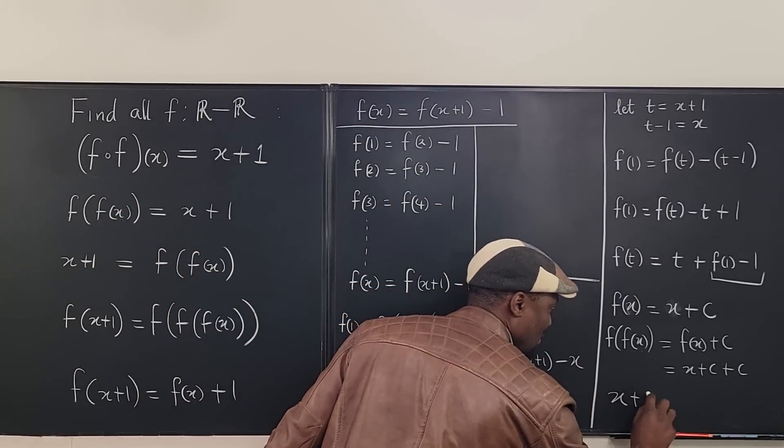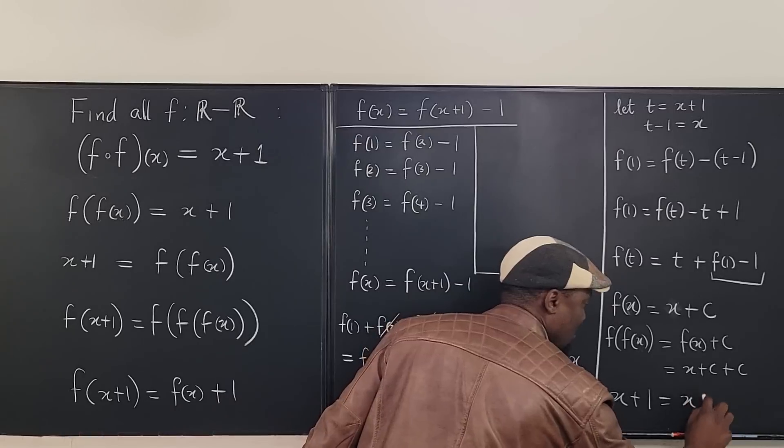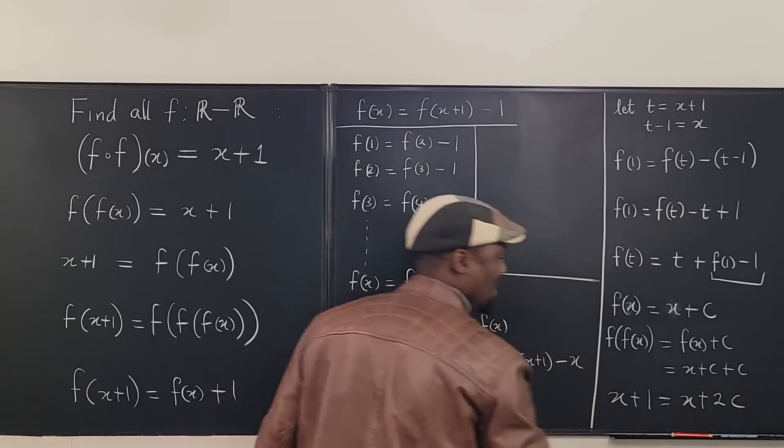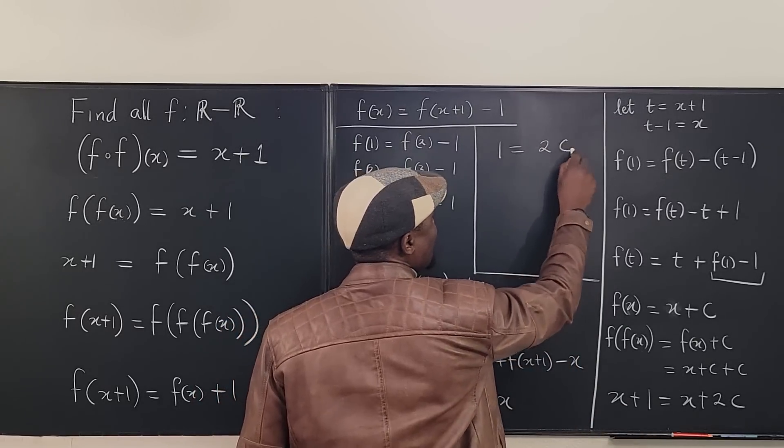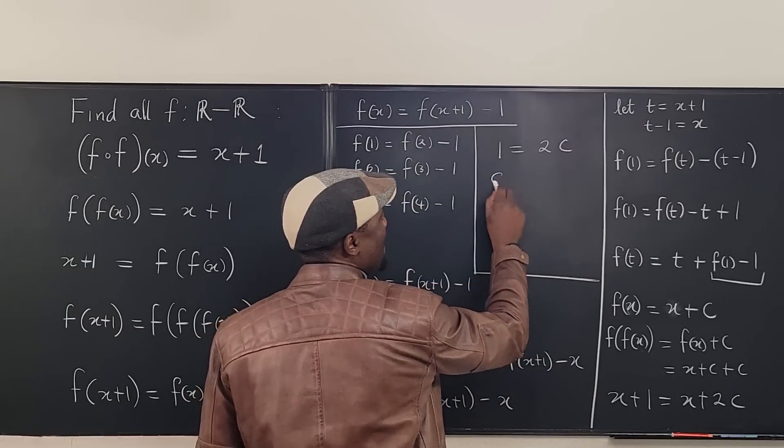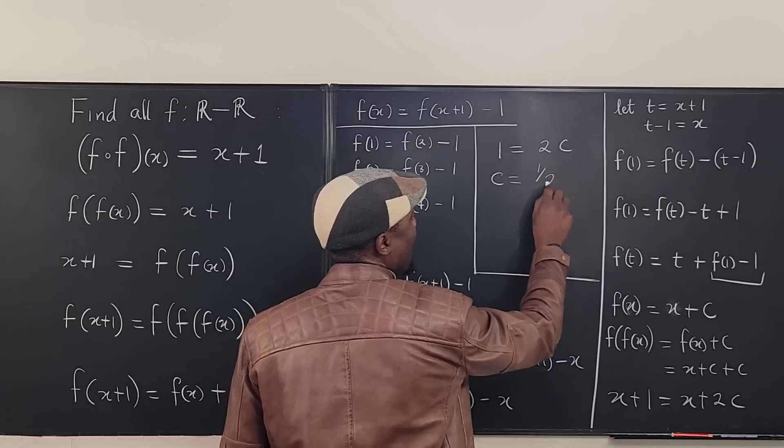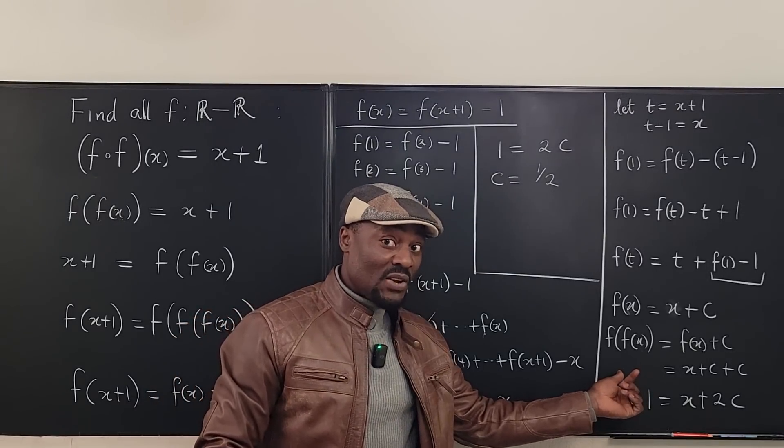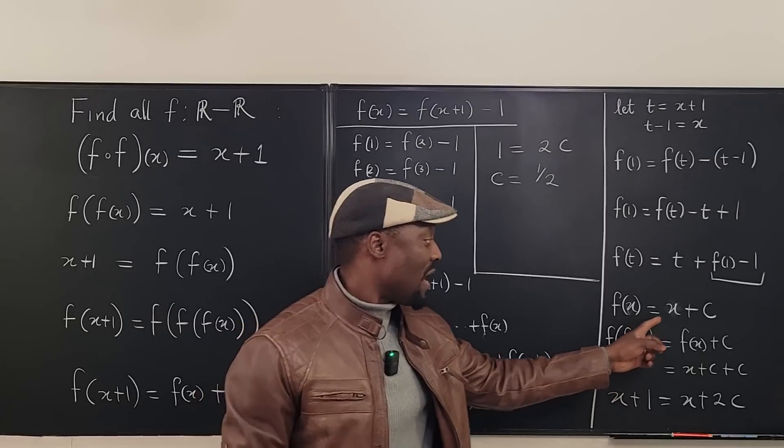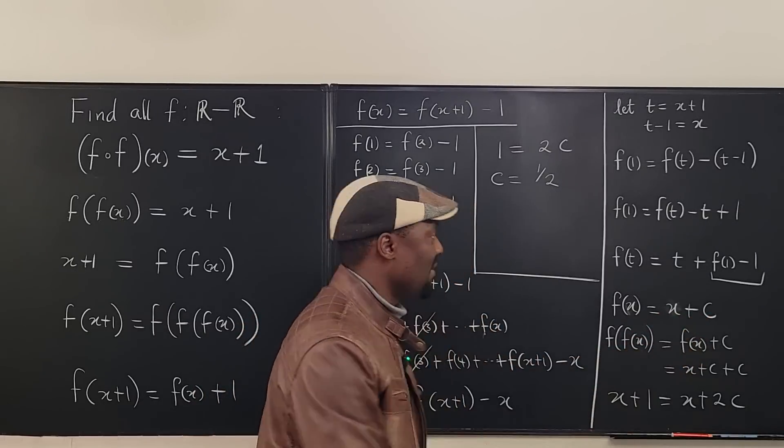x plus one equals x plus two c. That tells us that one is equal to two c and c must be equal to one half. So the function we're actually looking for is the one where you have x plus one half.